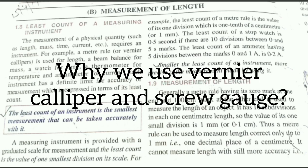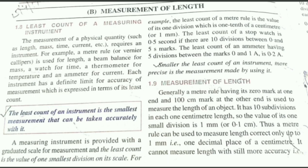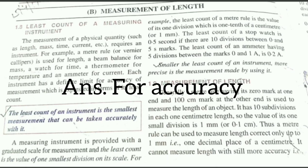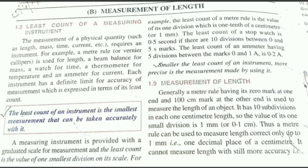Now the question comes: why do we use vernier caliper and screw gauge? Basically, these two instruments are used to measure the length of a rod, a cone, etc. For objects like a rod, a spare diameter, or a beaker where we have to measure depth and we require precise measurement — that is when we use vernier caliper and screw gauge.